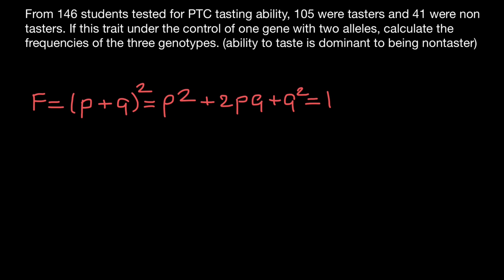The letters p and q come from probability theory. In genetics, we use dominant allele A and recessive allele a. So p² stands for the homozygous dominant genotype, 2pq stands for the frequency of the heterozygous genotype, and q² stands for the frequency of the homozygous recessive genotype. All alleles p and q in the gene pool equal one, or 100 percent.